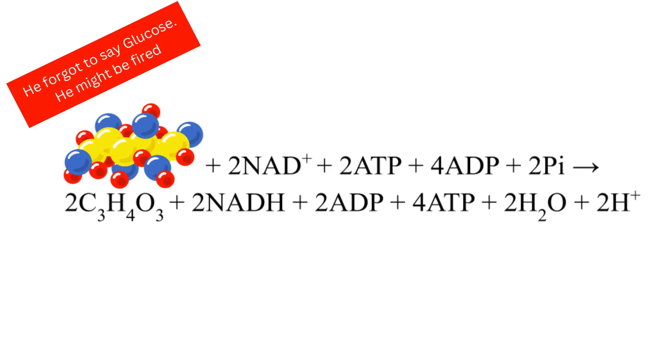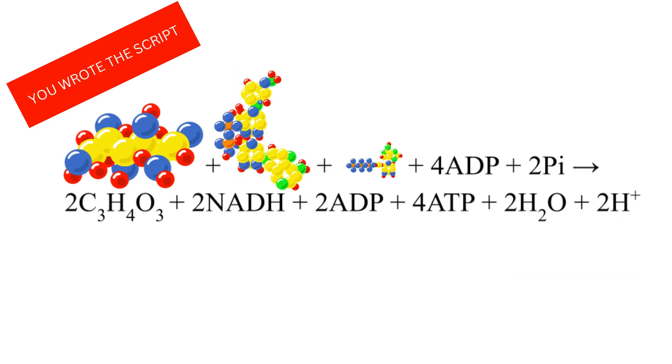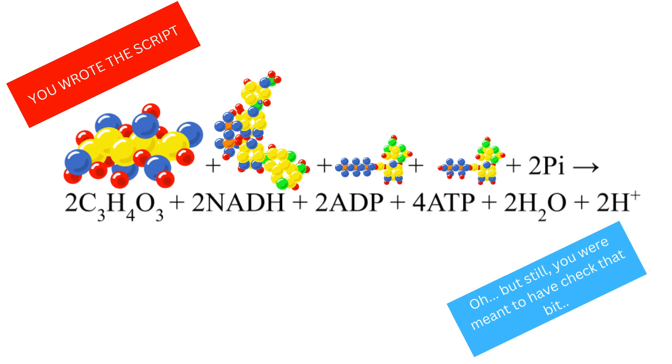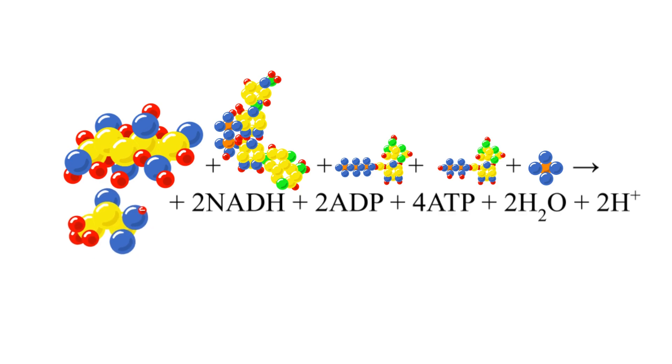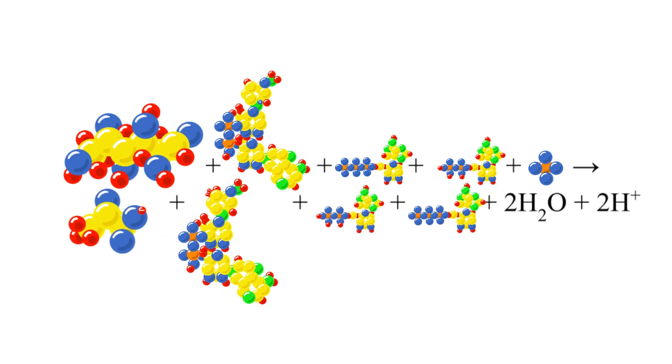In the reaction, you start with two NAD+ molecules, two ATP, four ADP, and two phosphate groups. After the reaction, you end up with two pyruvates, two NADH, two ADP, four ATP, two water molecules, and two protons.